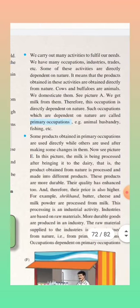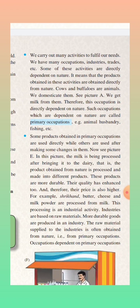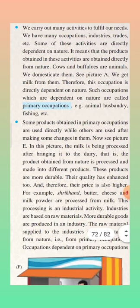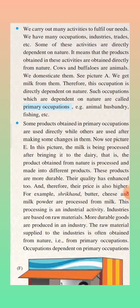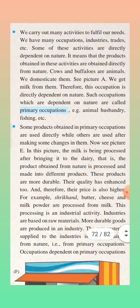We carry out many activities to fulfill our needs — we have many occupations, industries, trades, etc. Some of these activities are directly dependent on nature, meaning the products obtained in these activities come directly from nature. Cows, buffaloes, and other animals we domesticate — see picture A — we get milk from them. Therefore, this occupation is directly dependent on nature. Such occupations which are directly dependent on nature are called primary occupations. Examples: animal husbandry and fishing.